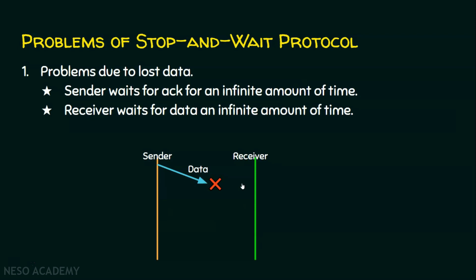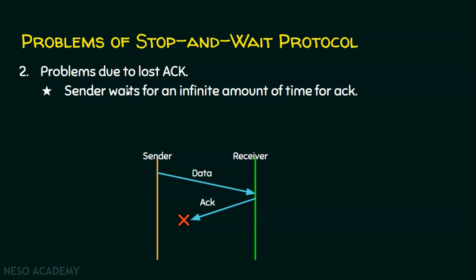The second problem is due to lost acknowledgement. In this case, the sender has sent the data and the receiver has sent the acknowledgement, but the acknowledgement is lost due to some problem in the network. The receiver will be waiting for an infinite amount of time, and there is no chance for the sender to receive the acknowledgement. Since the stop and wait protocol won't send any packet before receiving the previous acknowledgement, the sender is also waiting indefinitely.